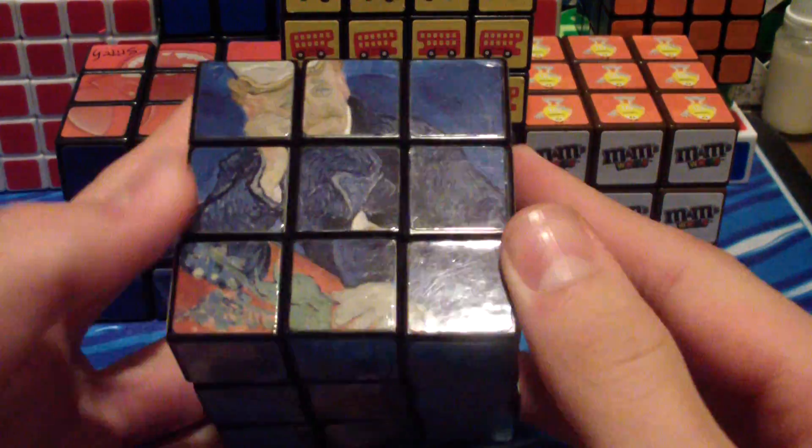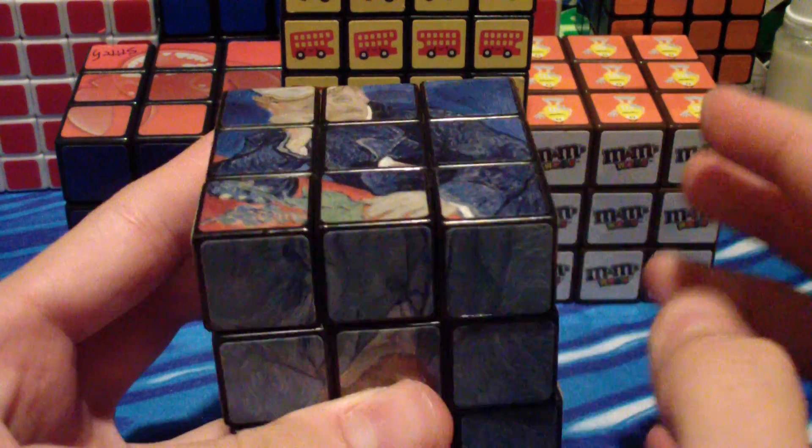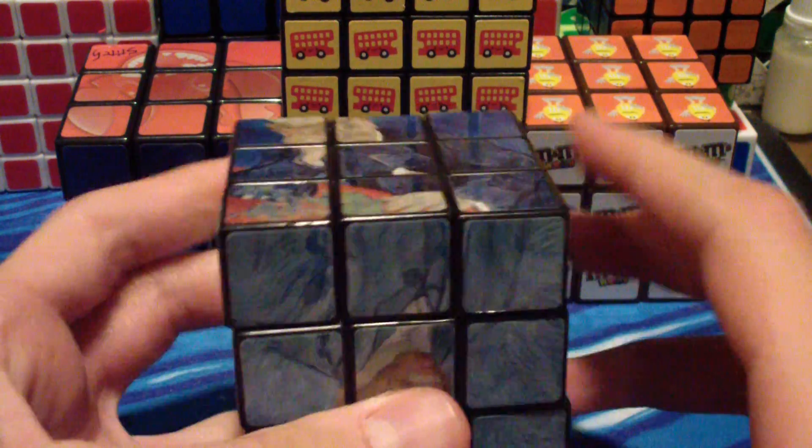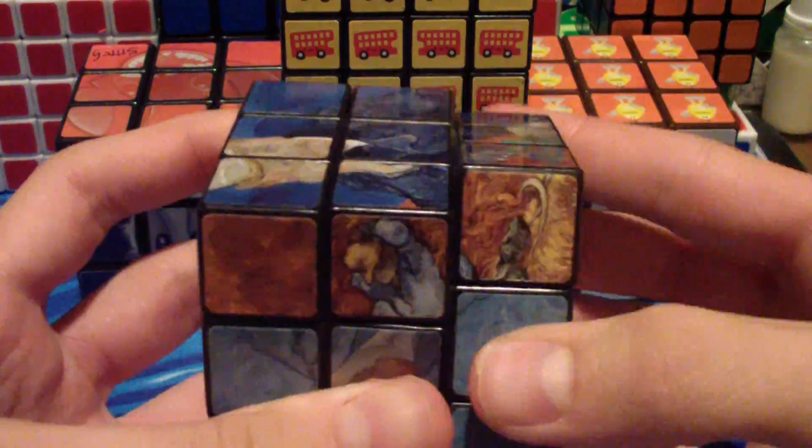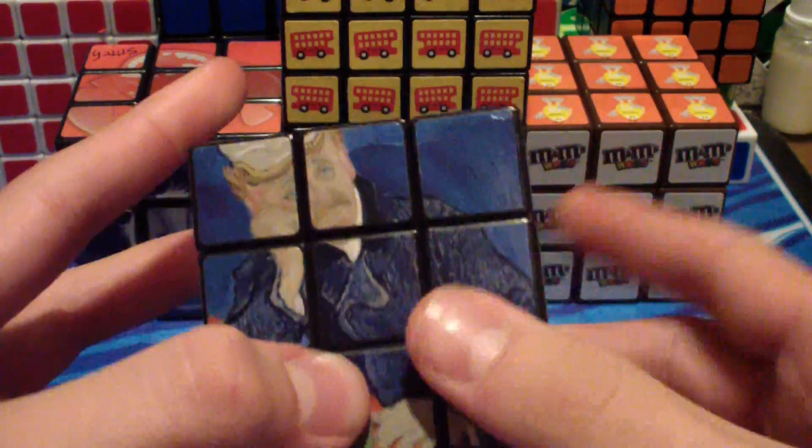The second method is to perform the algorithm right, up, right inverted, up five times. So that is the second method.